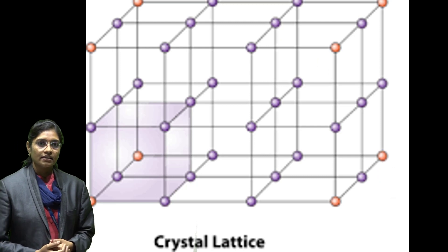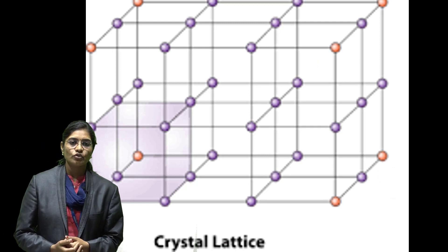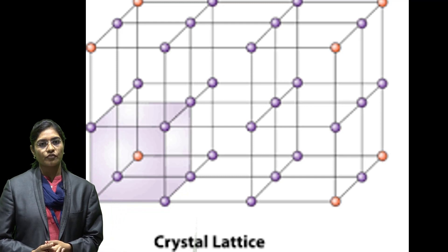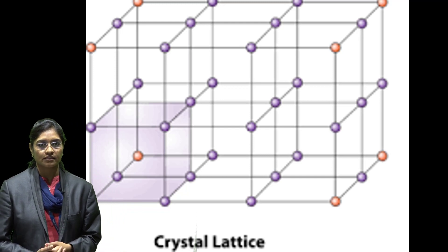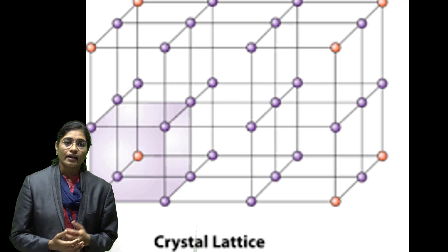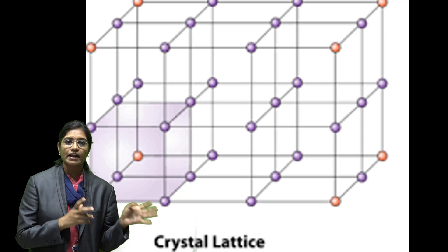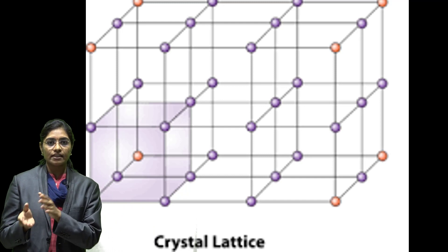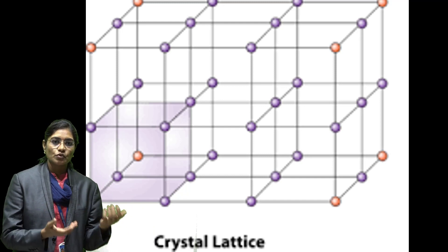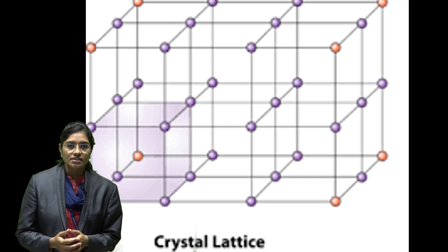Now we can look at the crystal. You know that crystalline solid is made up from a crystal. The crystal structure means the arrangement of atoms, ions and particles three-dimensionally in a space. We can observe this at a microscopic level, and it is called a crystal structure.